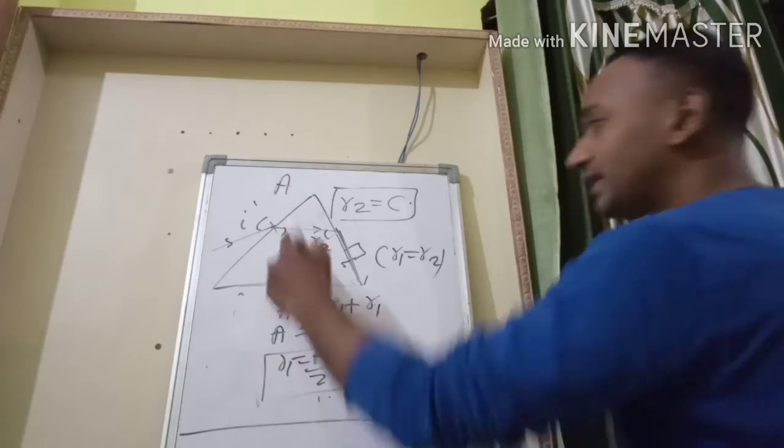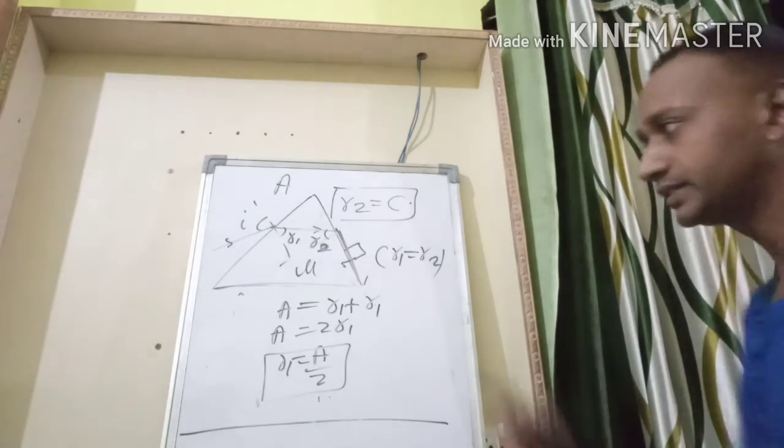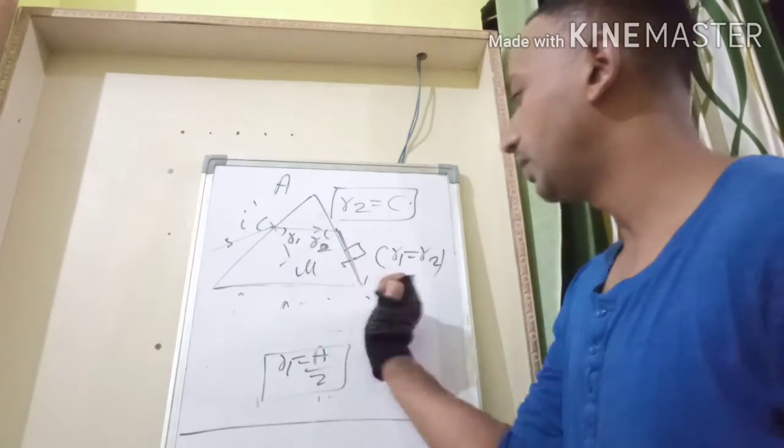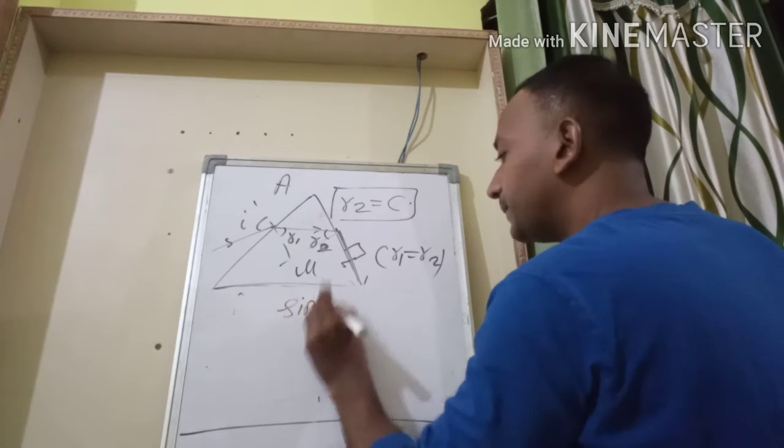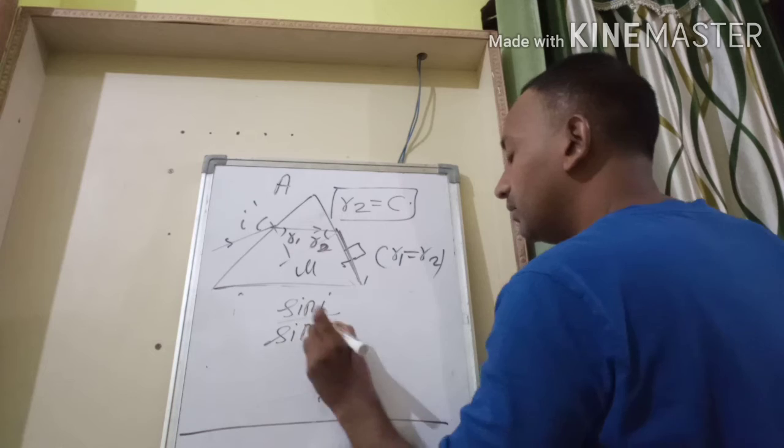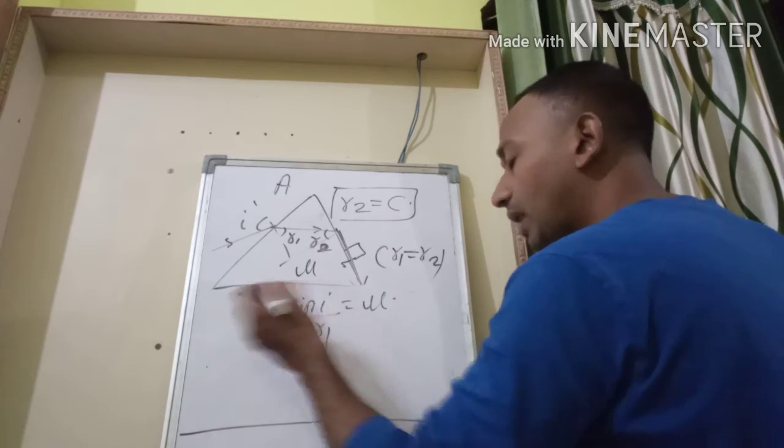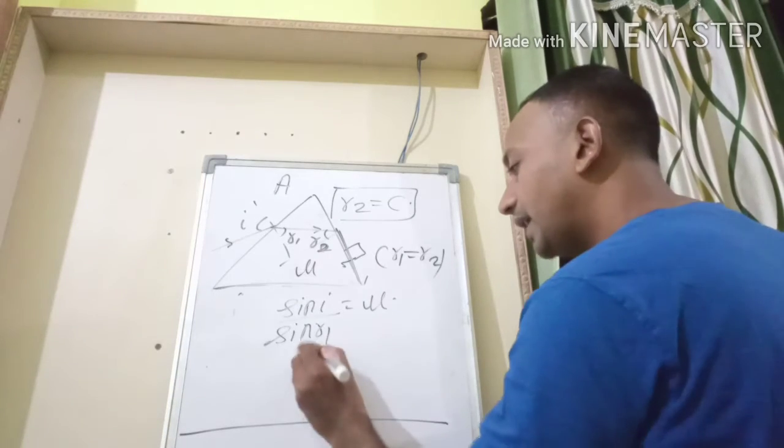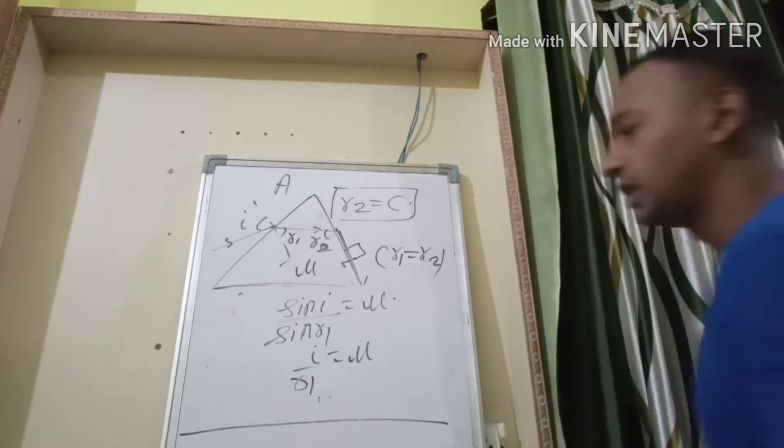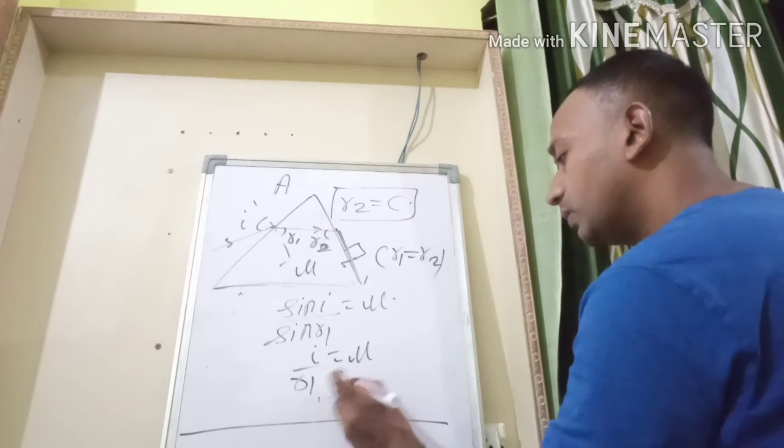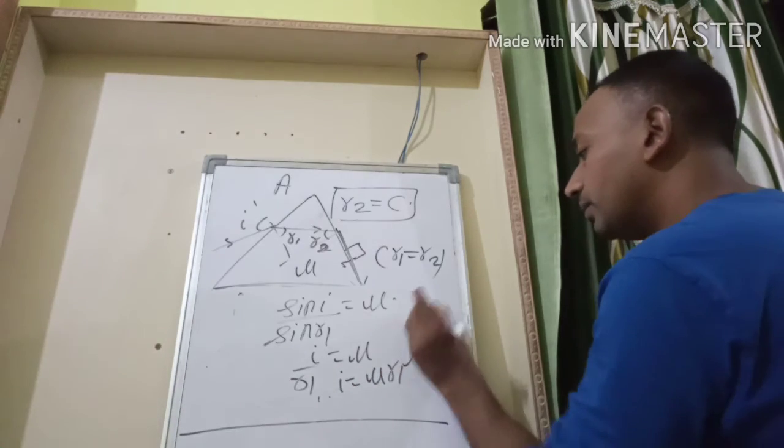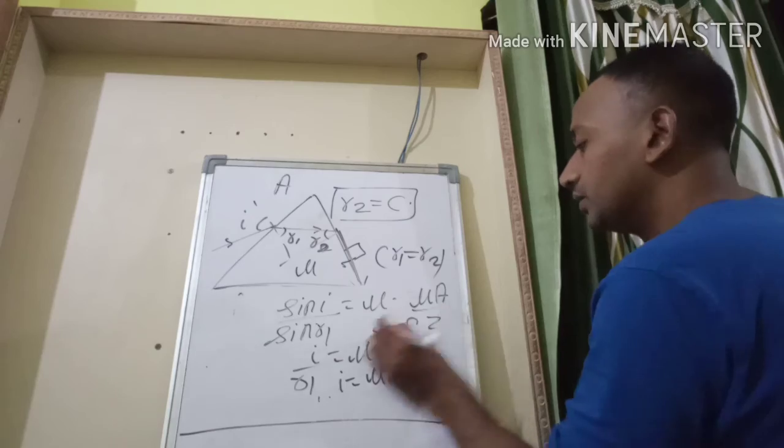Now I will apply Snell's equation at surface 1. We have got r1 equal to A/2. So if I apply sine i upon sine r1 equals μ, it being a small angle, we'll write i equals r1 times μ. What was r1? It was A/2. So we'll get μ times r1, and on replacing we'll get μA/2.